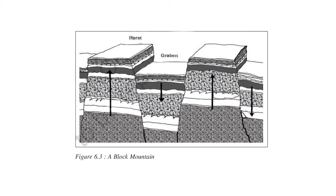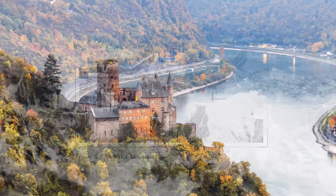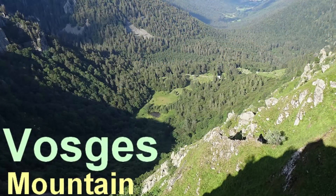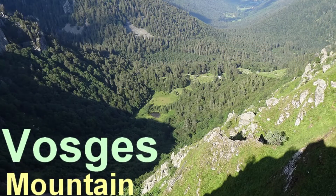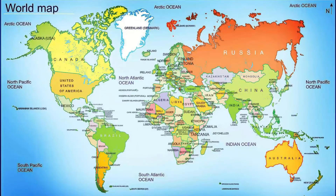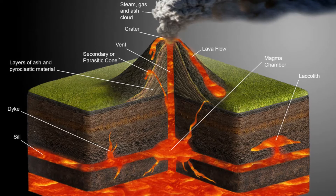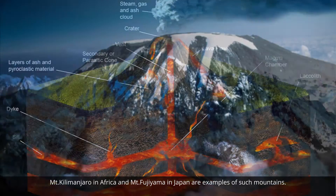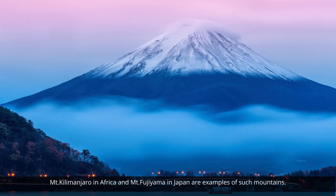Block mountains are created when large areas are broken and displaced vertically. The uplifted blocks are termed as horsts and the lowered blocks are called grabens. The Rhine Valley and the Vosges mountain in Europe are examples of such mountain systems. Locate them on the world map in the Atlas and find out some more examples of this type of landform.